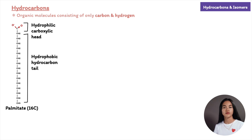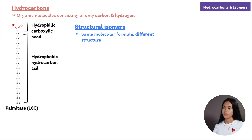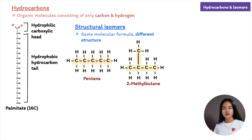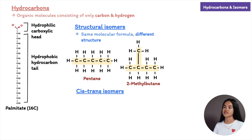There are molecules that have the same chemical formula — the same number of atoms of the same elements — but different structures; these are known as isomers. There are three types: structural, cis-trans, and enantiomers. Structural isomers differ in the arrangement of covalent bonding partners and may also differ in the location of double bonds. For example, pentane and 2-methylbutane both have the molecular formula C5H12, but pentane has a straight carbon skeleton while 2-methylbutane is branched.